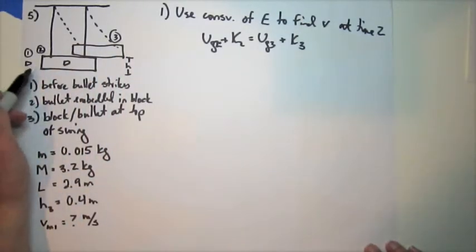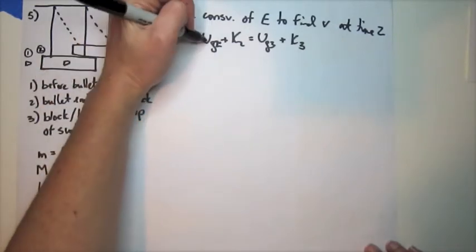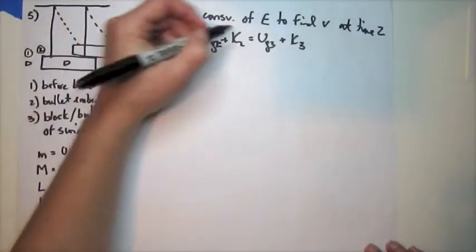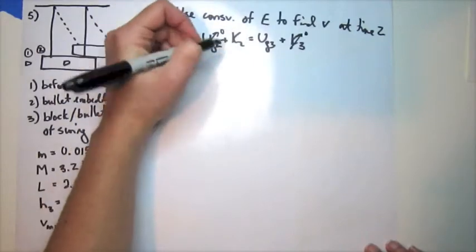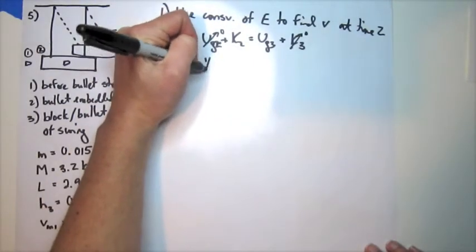At time 2, it's at the lowest height. So my Ug2 is 0. At time 3, it's at the highest height. For my K3 is 0. So I'm left with 1 half.